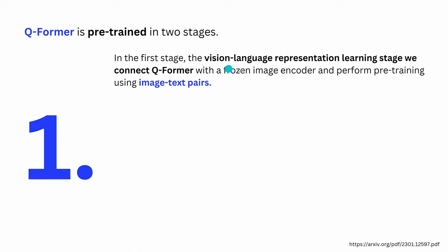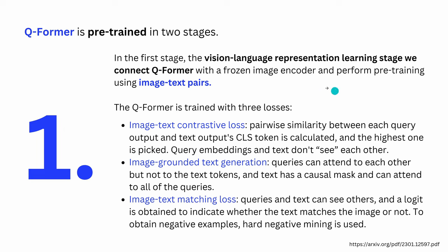So how does the pre-training happen? There are two stages. In the first stage — the vision-language representation learning stage — we connect the Q-Former with the frozen image encoder only, and perform pre-training using specific image-text pairs. You have an image paired with a text description of its contents, and another image with another text description.